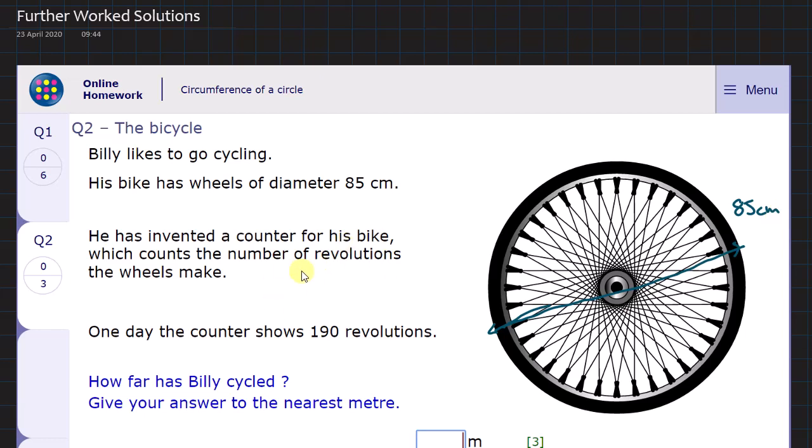He's got a little counter which counts the number of revolutions the wheel makes. Every time this spoke gets back to the top, it goes click and counts 1, 2, 3, and it counts every time that peak gets to the top.